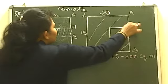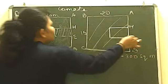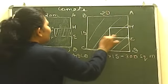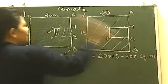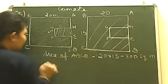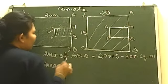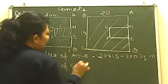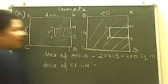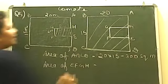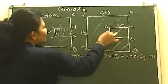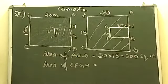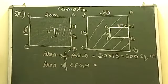Now I am taking out the smaller portion. Its name is EFGH — E, F, G, H. The dimensions are 8 meters and 6 meters. May I know from you what will come if we take out the area of this smaller rectangle EFGH?